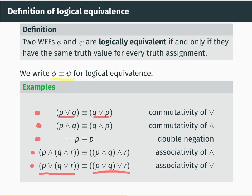That's another way to describe logical equivalence: two well-formed formulas are logically equivalent if and only if they have precisely the same truth table. Let's do that in an example. We'll look at the first logical equivalence and write down a truth table with columns for P, Q, P or Q, and Q or P.